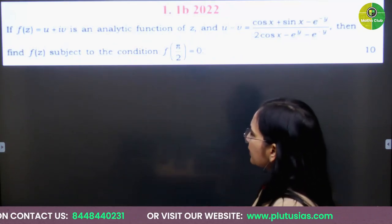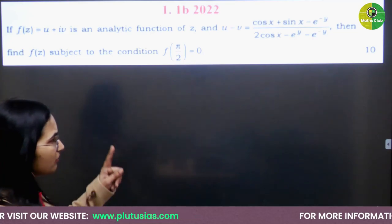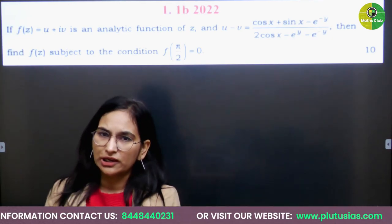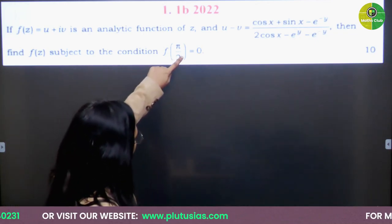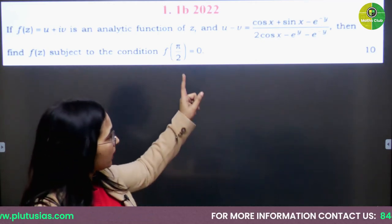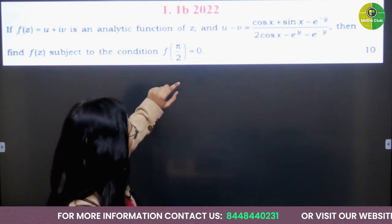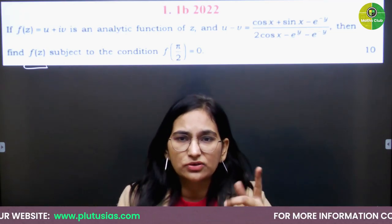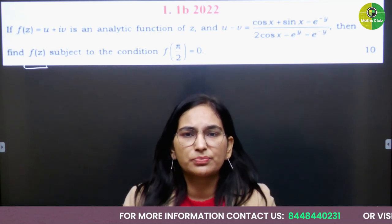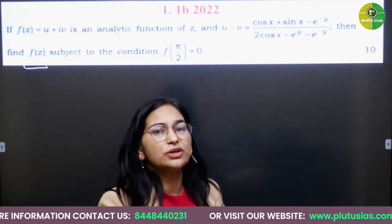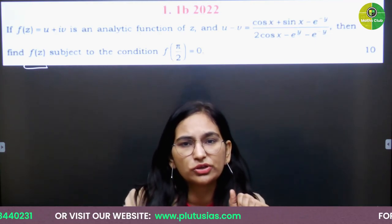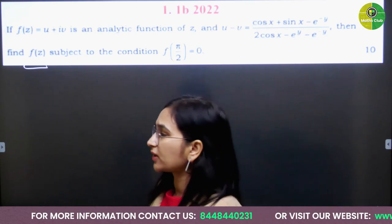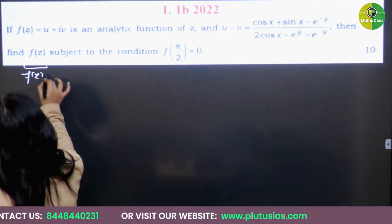The first question was asked in 2022 for 10 marks. They say f(z) = u + iota·v is a complex function where u is the real part and v is the imaginary part. They have provided u minus v and asked to find f(z). Milne-Thomson method can find f(z) only if you have either the real part or the imaginary part, but here we have the combination u minus v.